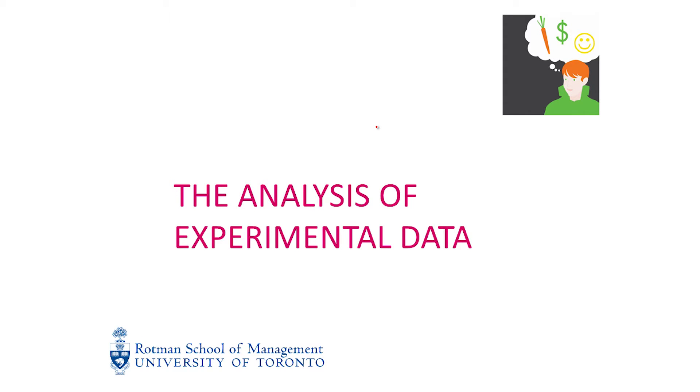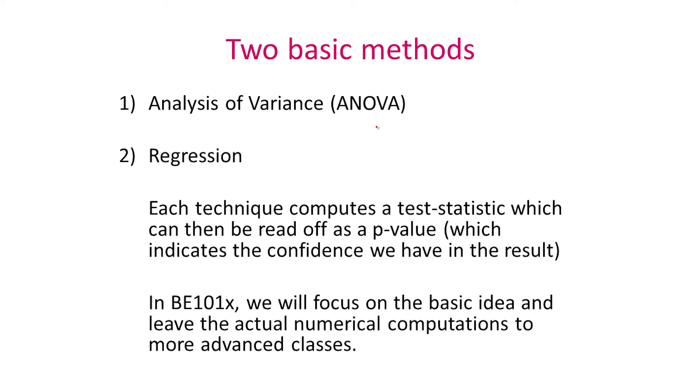In this segment, we look at different ways in which experimental data can be analyzed. There are two broad sets of techniques used to analyze experimental data. The first one is called ANOVA, or the analysis of variance, and the second one is regression.